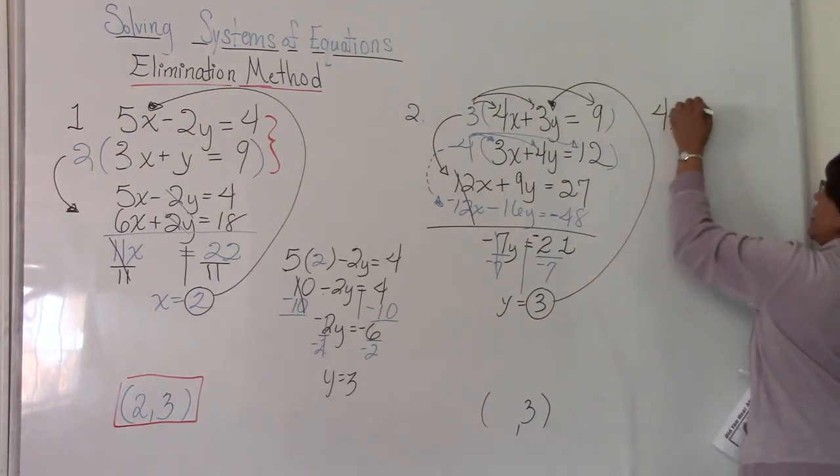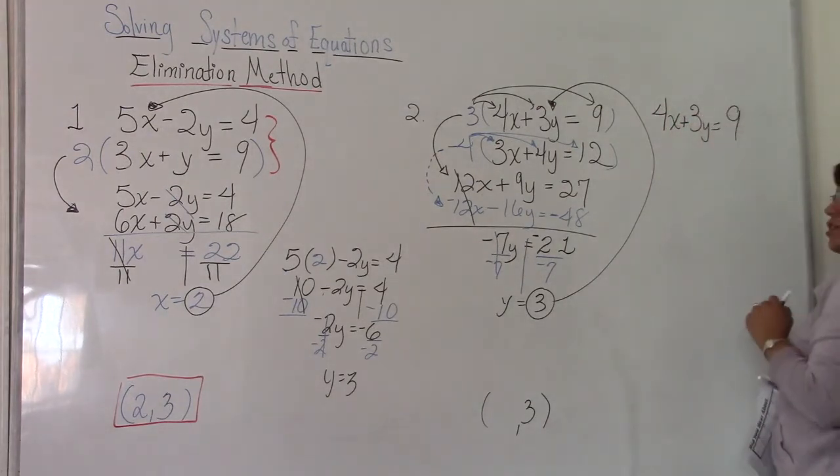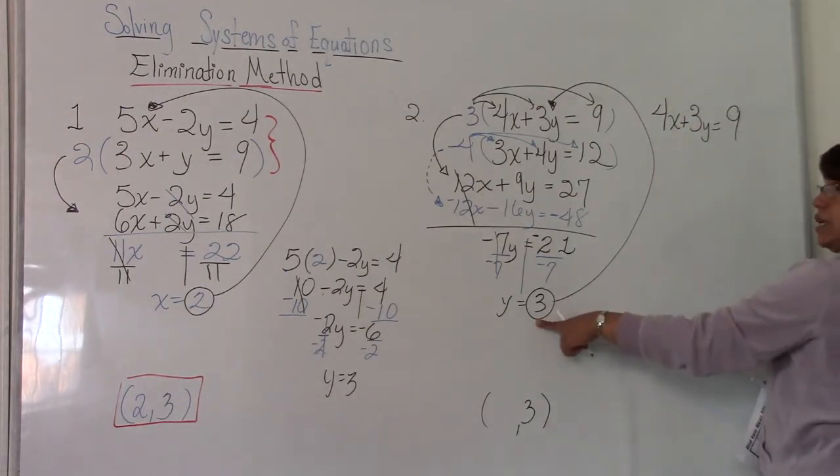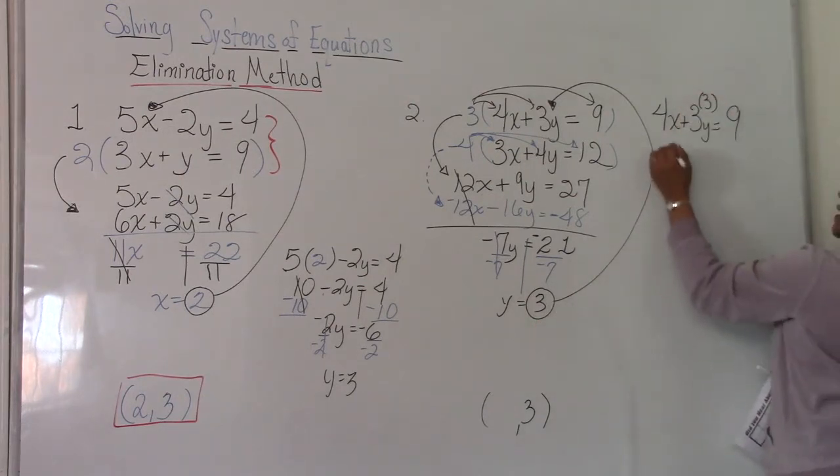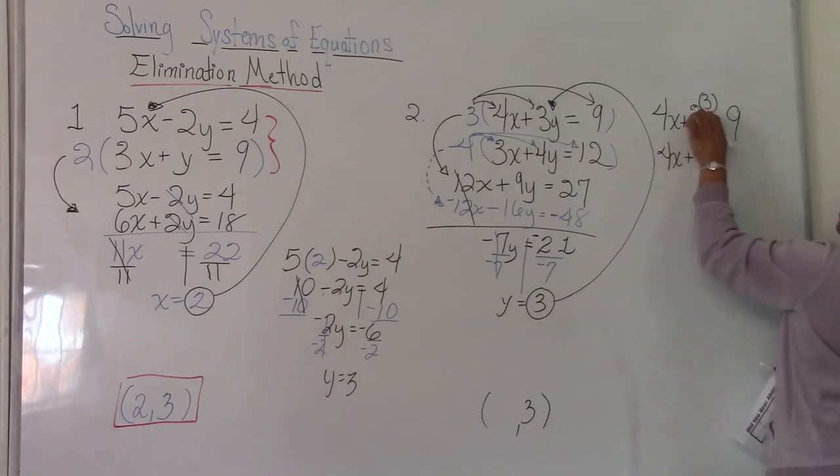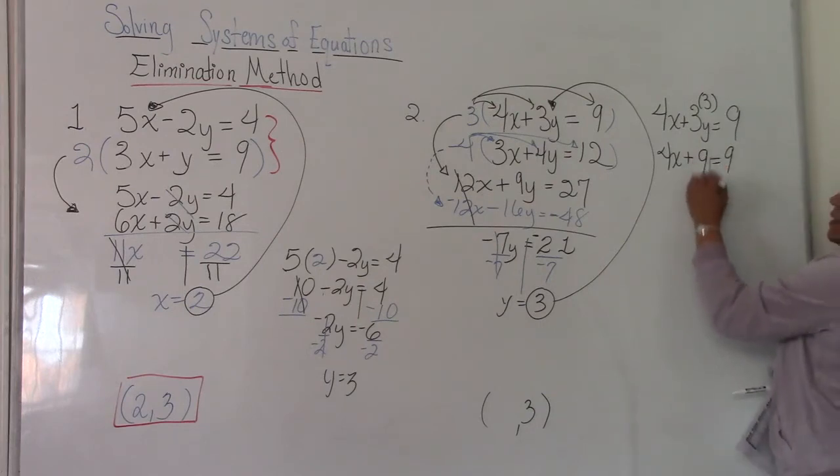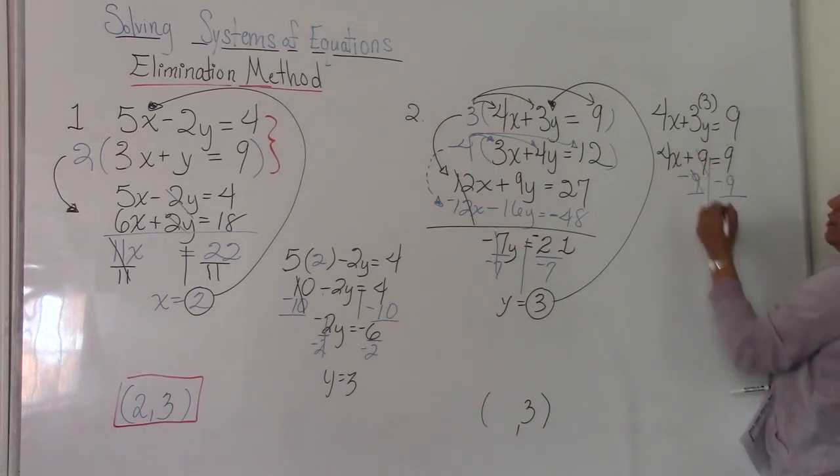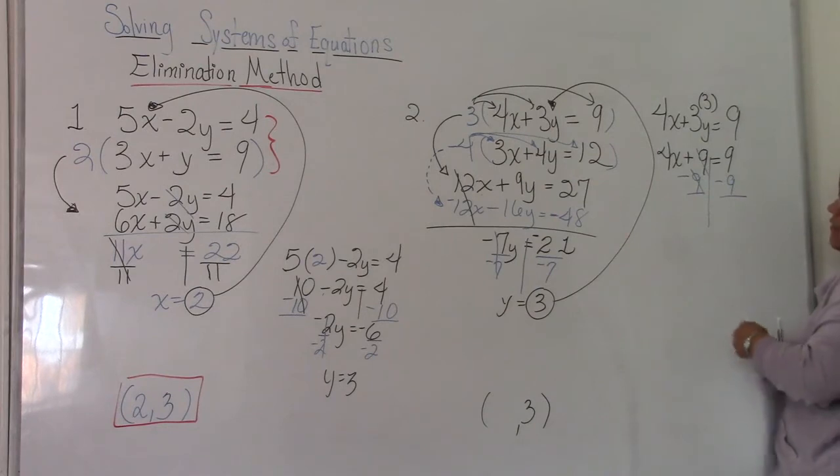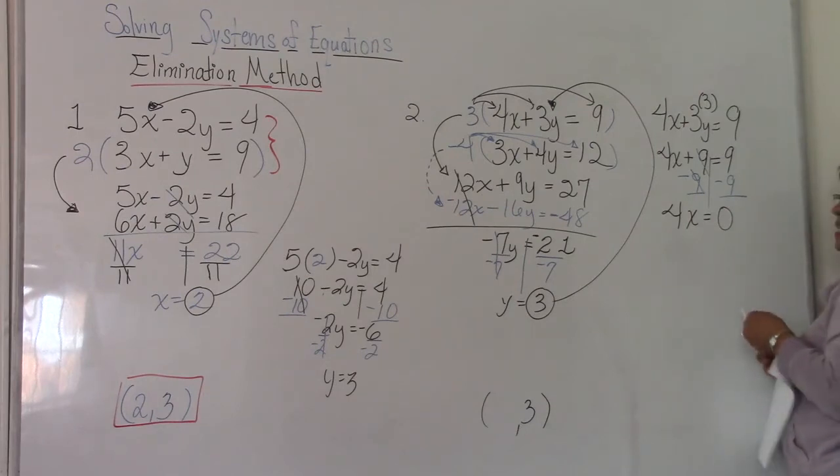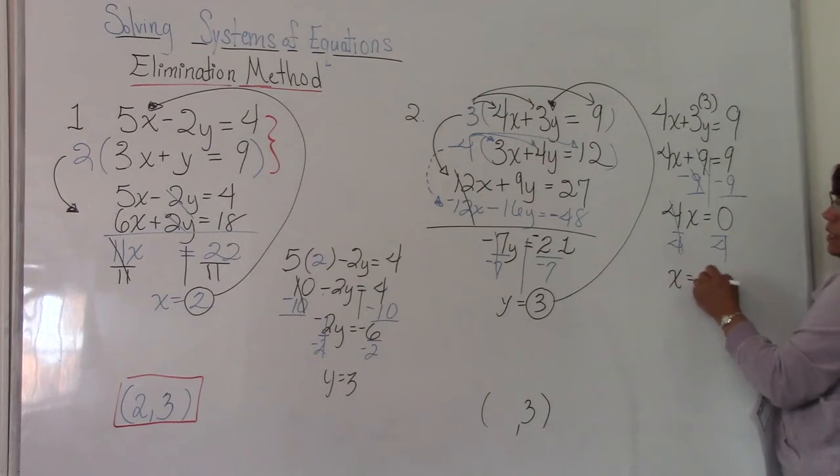So just because it looks a little messy, I'm going to bring this over. 4x plus 3y equals 9. That was the original equation. And we're going to plug in 3 in place of y. So we have 4x plus 3 times 3 is 9, equals 9. And now what would you do to solve for x? We're going to subtract 9 from both sides of our equation. Good. And so we have 4x equals 0. What do we need to do now? Opposite of multiplication, right? We need to divide by 4, and we get x is equal to 0. So we're saying that our ordered pair should be 0, 3.